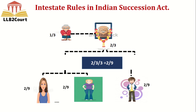An important rule is that there is no discrimination between a girl and a boy — both will share the property equally, unlike Muslim law. Additionally, if an Indian Christian female dies intestate, the same rules and shares will be applicable. If an Indian Christian female dies leaving her husband, the husband will get a 1/3 share and the lineal descendants will get a 2/3 share.